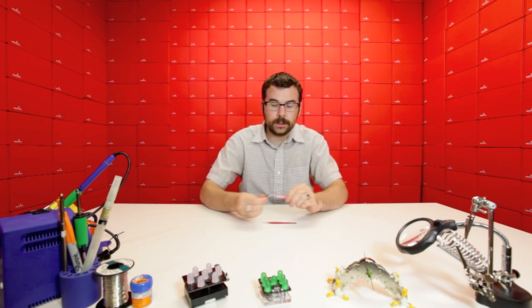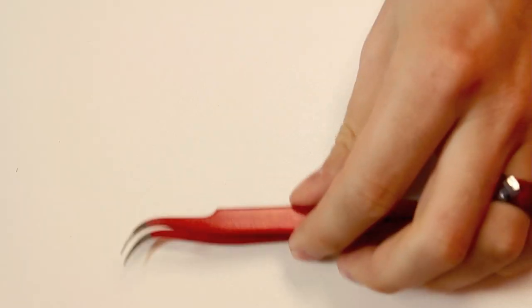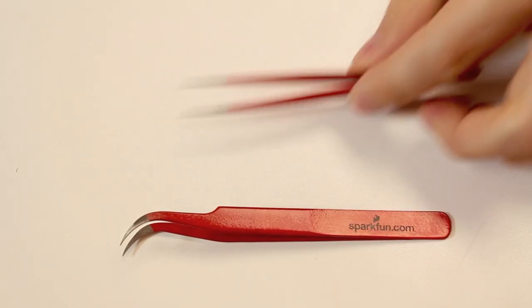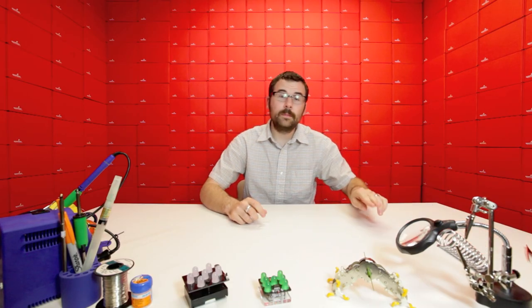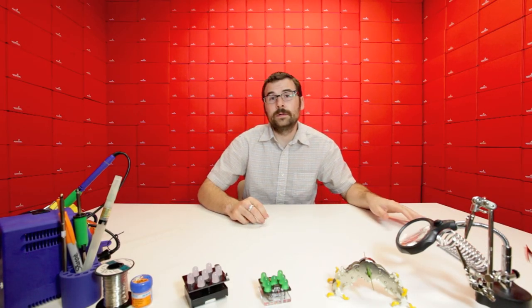We've got two varieties. We've got one with a curved tip, and then we've also got one with a straight tip. And both of these have really nice, precise tips on them. They line up well, and you can pick up really small components with them.